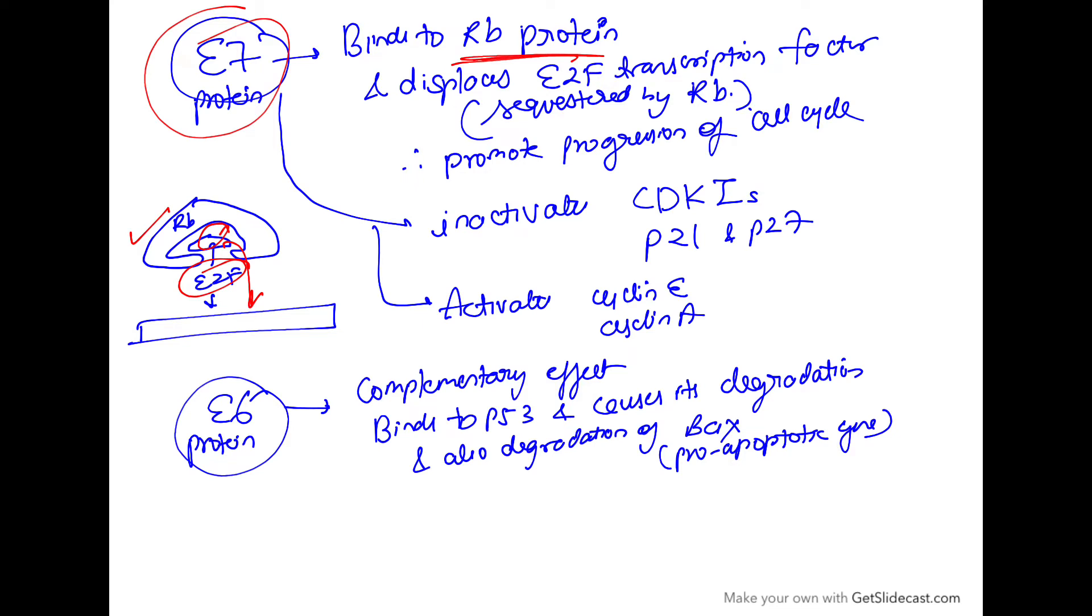Second, E7 inactivates the CDK inhibitors like p21 and p27, the cell cycle inhibitors, and simultaneously activates cyclin E and cyclin A. So it promotes the cell cycle progression by inhibiting the inhibitors and activating the activators cyclin D, cyclin E, and cyclin A.